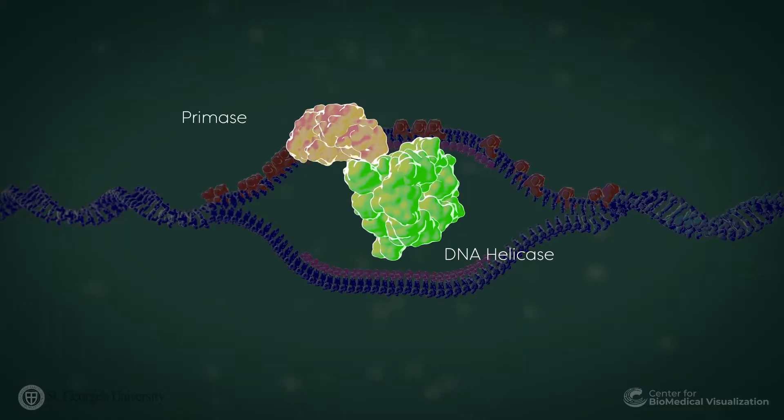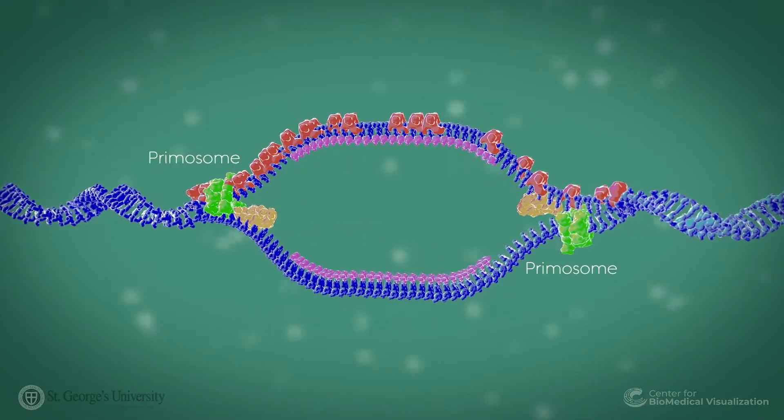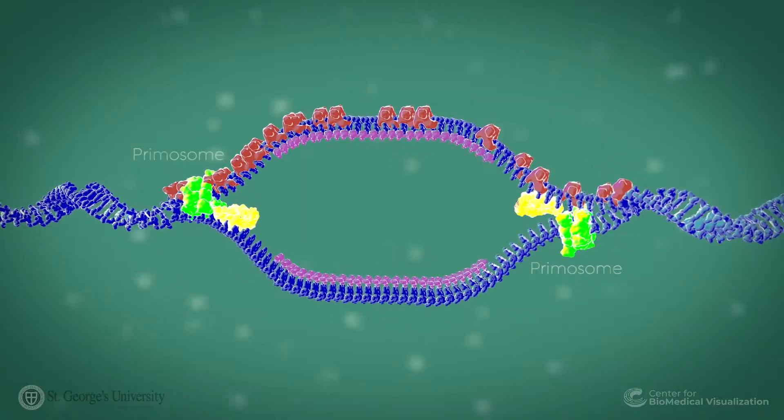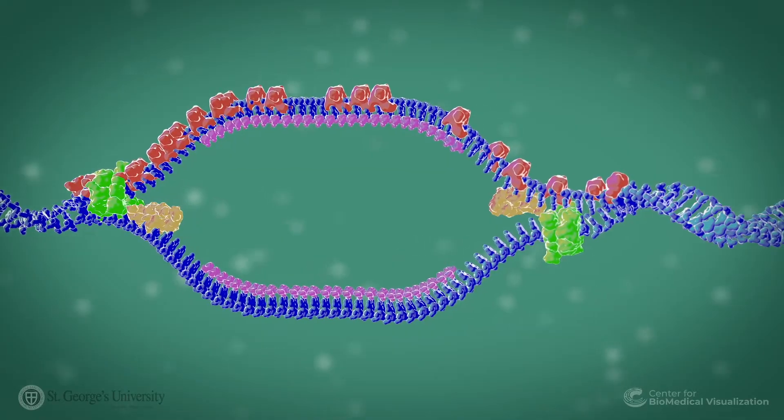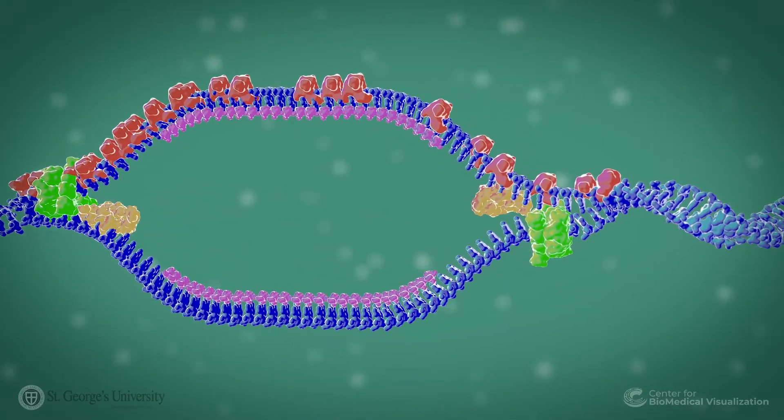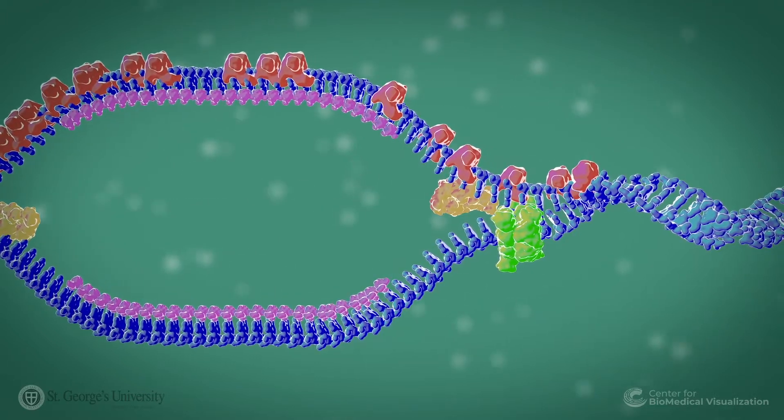DNA helicase and primase assemble at the replication forks to form the primosome. Following the assembly of the primosome, DNA helicase begins to unwind the double-stranded DNA at each replication fork.